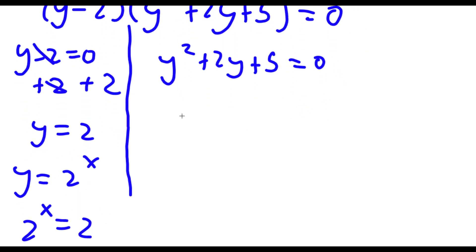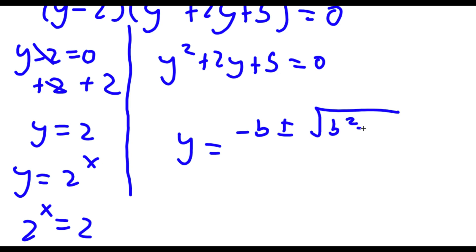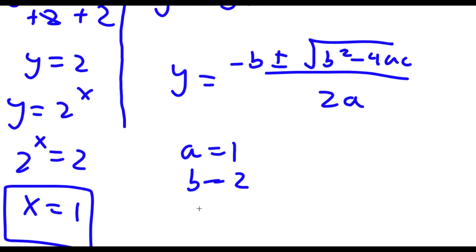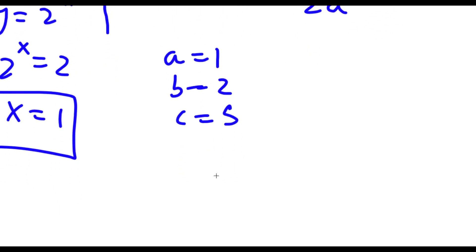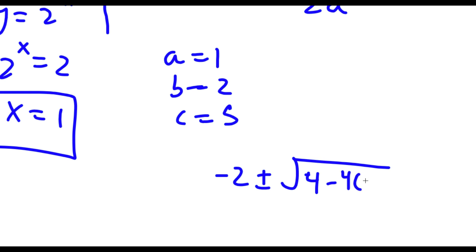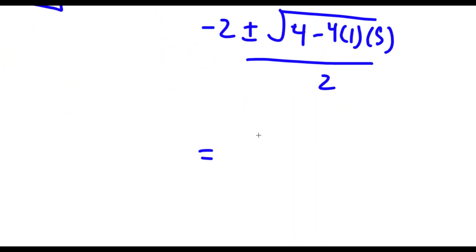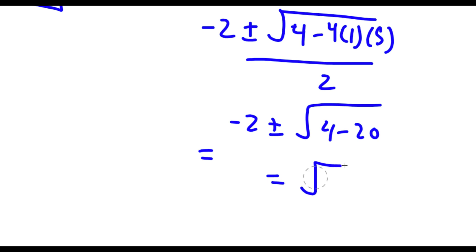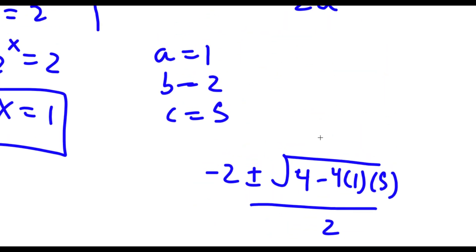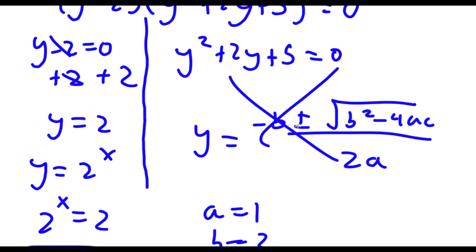For y squared plus 2y plus 5, I'm going to use the quadratic formula: negative b plus or minus the square root of b squared minus 4ac, all over 2a. In this case a is 1, b is 2, and c is 5. So I have negative 2 plus or minus the square root of 4 — because 2 squared is 4 — minus 4 times 1 times 5, all over 2. This equals negative 2 plus or minus the square root of 4 minus 20, which is the square root of negative 16. This is a negative value, meaning this would not work out because you can't take the square root of a negative number.